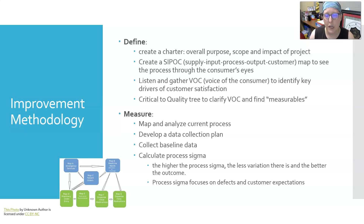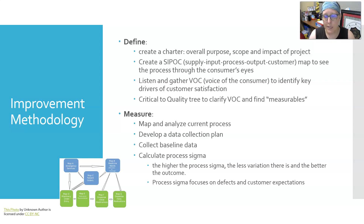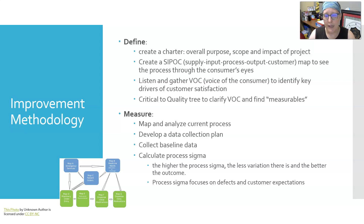In the Measure phase, you map and analyze the current process as it is. Once you've mapped it, you develop a data collection plan — what data you're going to gather, where, and when. Then you collect that data to establish your baseline. You calculate the process sigma of the baseline data. The higher the process sigma, the less variation there is and the better the outcome. Process sigmas can be one through six sigma — six sigma is the highest quality and one sigma is the lowest. The process sigma focuses on defects and customer expectations.